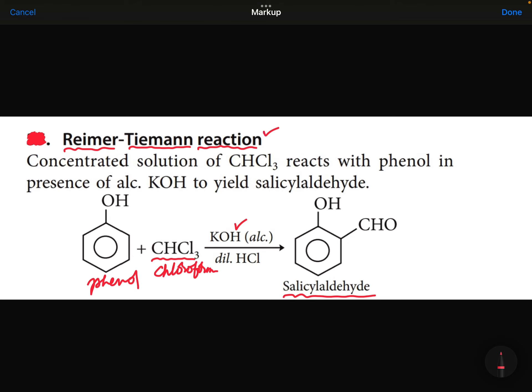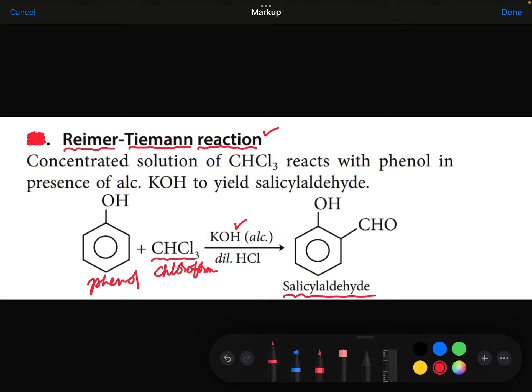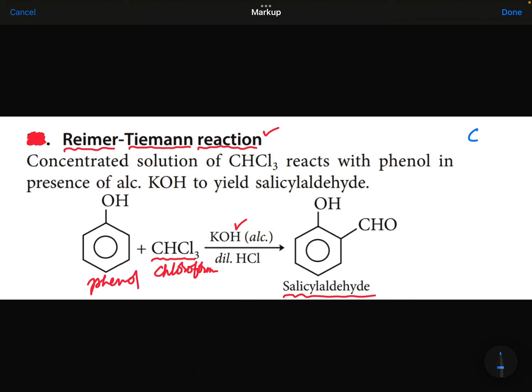Phenol + chloroform + base → salicylaldehyde. Two important questions to remember here. First question: what is the intermediate? The intermediate is dichlorocarbene, CCl2.